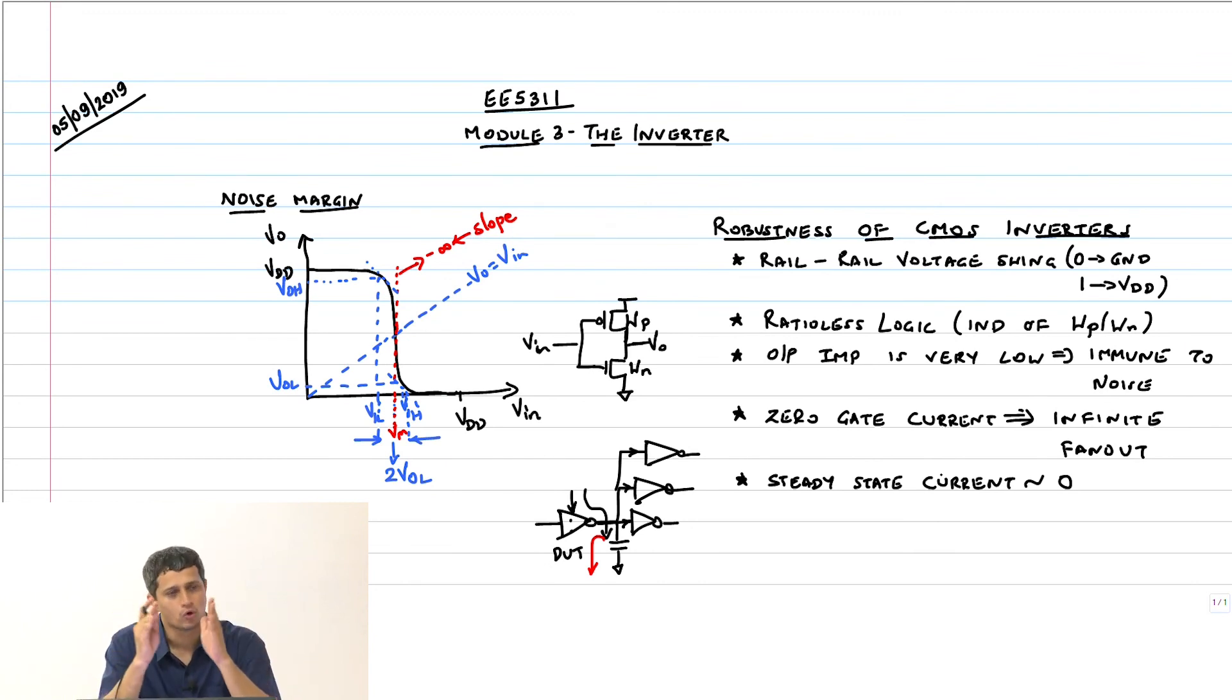This is the summary of the robustness of CMOS inverters and CMOS logic in general. I should also maybe add another word here called static CMOS. This word static refers to the logic being driven to either power or ground through a low resistance path.